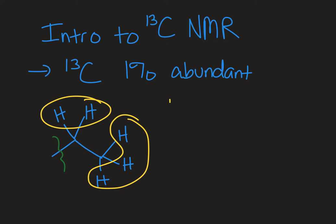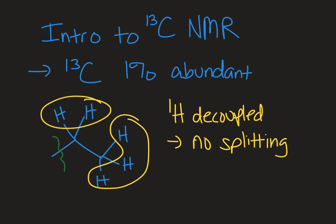So what we do is we run a proton decoupled spectrum when we're doing carbon-13 analysis. What we see in the carbon-13 is no splitting. We see each unique carbon having one signal associated with it, but that signal is always going to be a singlet.